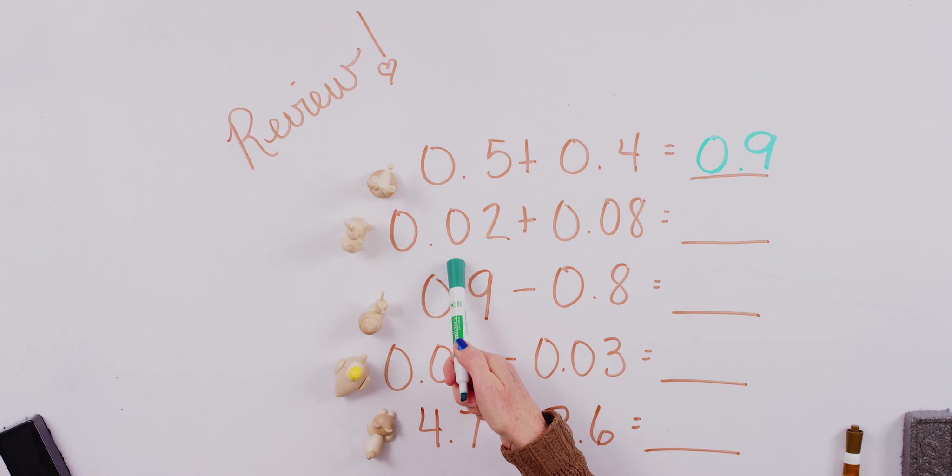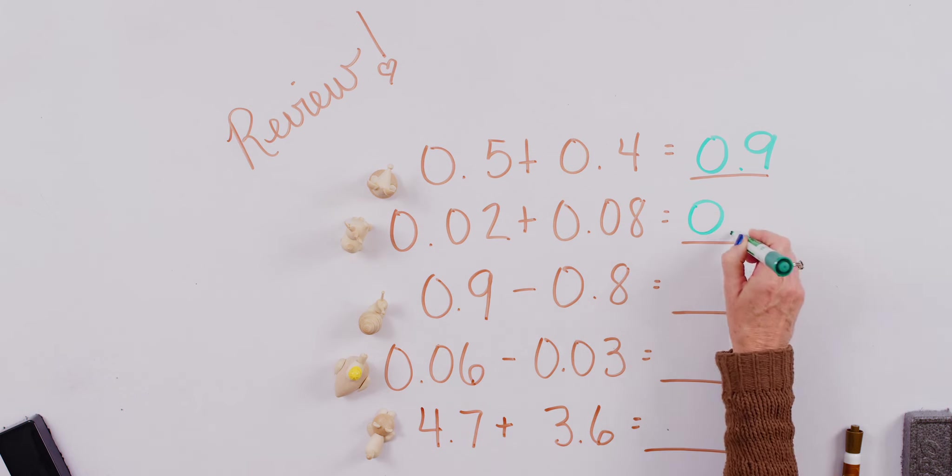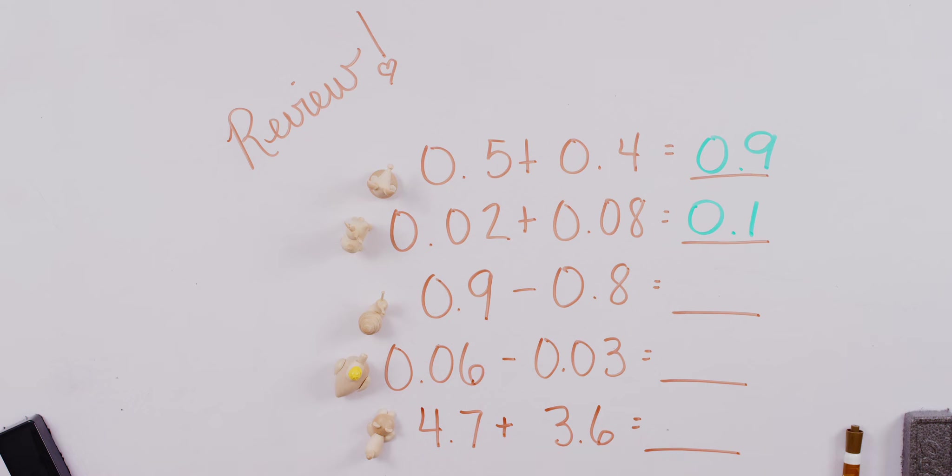Let's take a look. Now we have two hundredths plus eight hundredths. What does that give us? Ready? Go. Did you remember that eight plus two equals ten? And when we talk about ten hundredths, that's just one tenth.